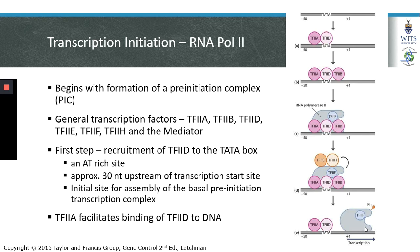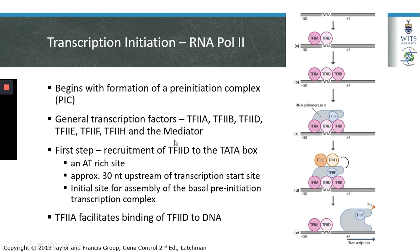Transcription initiation by RNA polymerase 2 begins with the formation of a pre-initiation complex, which is made up of a number of different transcription factors. TF2A stands for transcription factor for RNA polymerase 2A, with the naming continuing as TF2B, TF2D, TF2E, TF2F, and TF2H. The mediator is also considered a transcription factor. In the assembly of the basal transcription complex, we will discuss the first six general transcription factors and then address the role of the mediator later on.